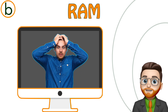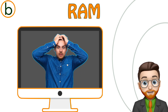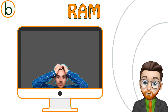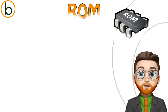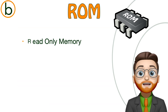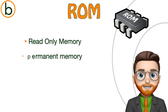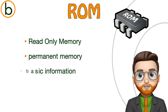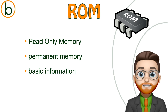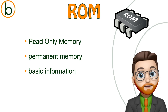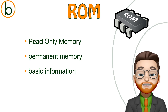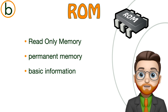That means the more RAM you have, the more programs you can run simultaneously, with all that unsaved data. ROM, or read-only memory, is permanent memory. It contains essential information your computer needs to get started. Even when your computer is turned off, the contents of the ROM remain — so unlike RAM, which is completely erased when the power goes off.